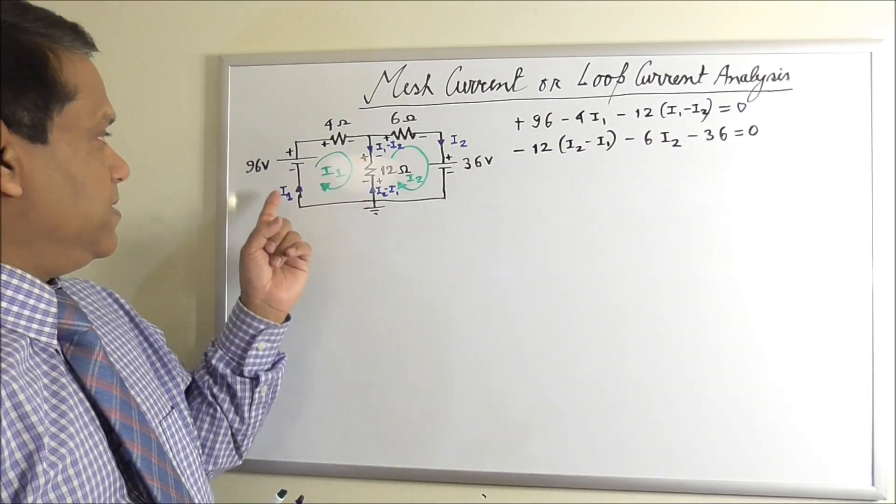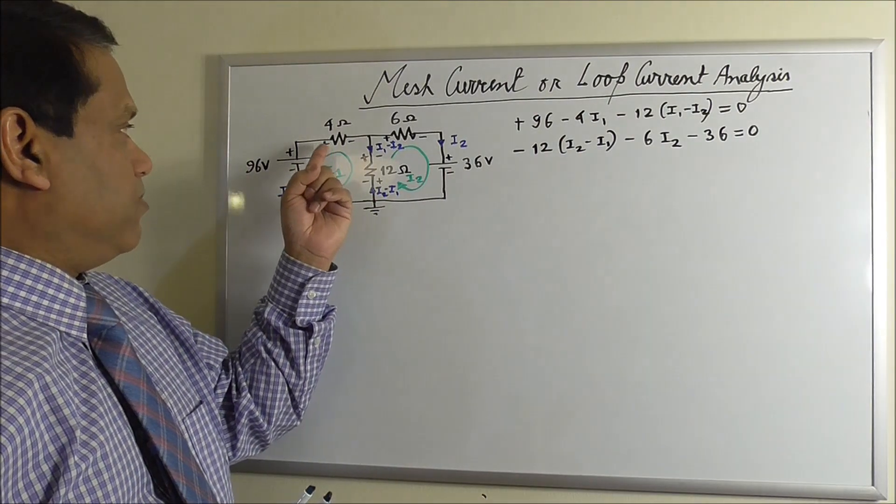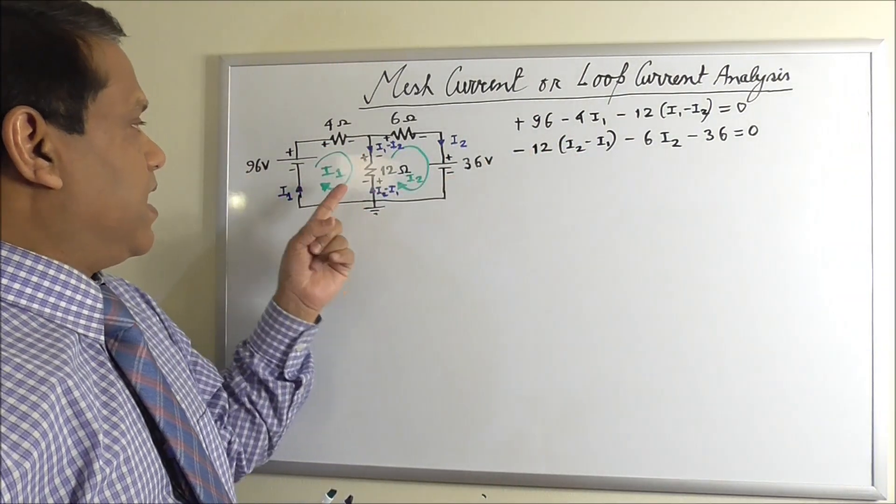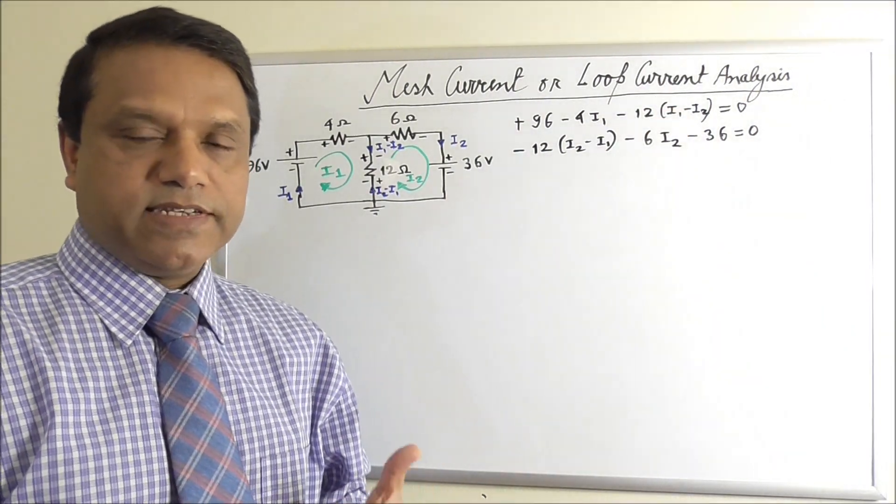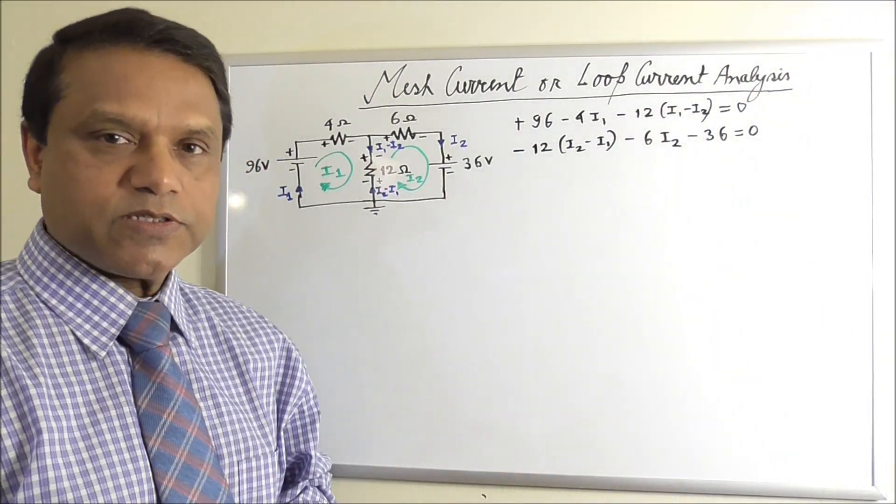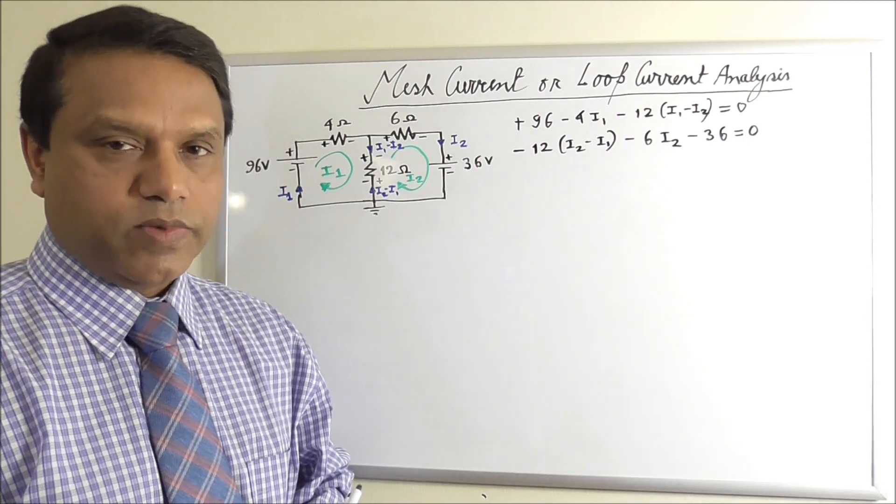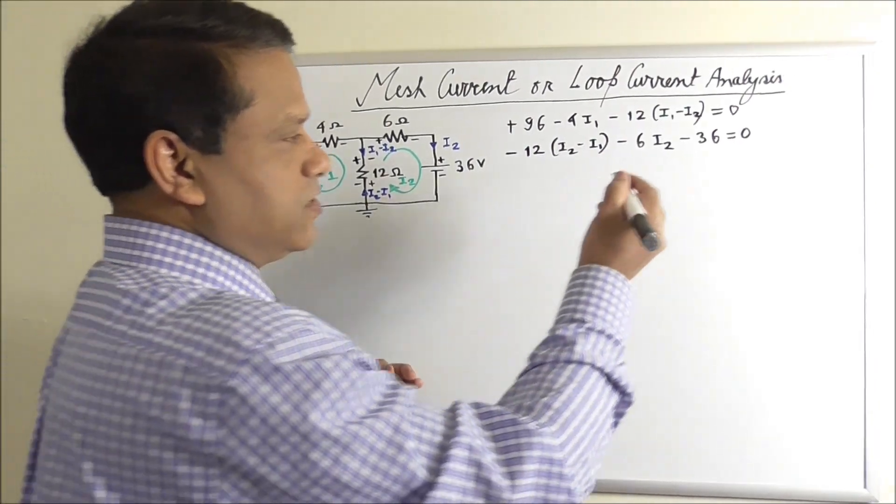And in this loop we see, the voltage drop in the 4-ohm resistor is negative, and voltage drop in the 12-ohm resistor is negative. It basically makes it easier to write correct equations and not to make mistakes. So these are the two equations.